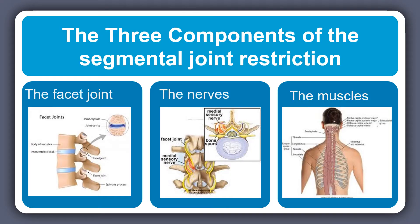There are three primary components that lead to this segmental joint restriction or lack of mobility in the spine. One is the facet joint, which helps to create motion in the spine. The nerves are basically the battery pack for the entire nervous system — they send signals to the body to get it to move, so if those aren't working correctly, that can stop movement. And of course the muscles, which create a lot of the movement in the body.